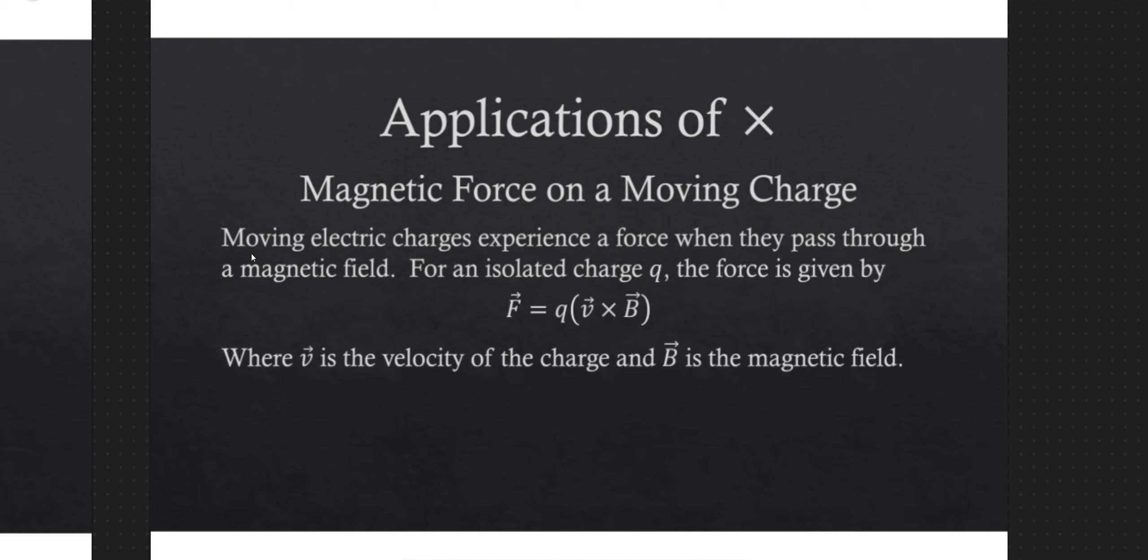If you've taken an electromagnetism class, you know that a moving electric charge will experience a force when it passes through a magnetic field. If you haven't seen an electromagnetism class, that's okay. I'm going to show a little example. But this is the idea that if you just have a charge moving through a magnetic field, it's going to feel a force. It's going to move according to that magnetic field. So how is this force calculated?